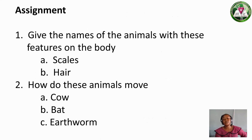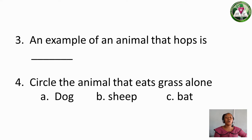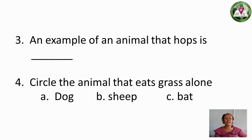Alright, before I leave I would like you to take down your assignments. One: Give the names of animals with these features on the body — A. Scales, B. Hair. Two: How do these animals move? A. Cow, B. Bat, C. Earthworm. Three: An example of an animal that hops is ___. Four: Circle the animal that eats grass — A. Dog, B. Sheep, C. Bat. Remember, I am Mrs. Toby Chinaza Rejoice. Bye!